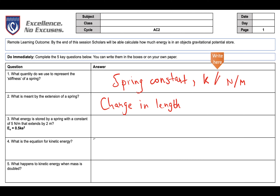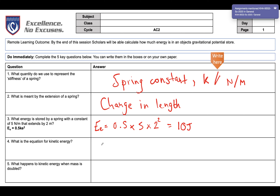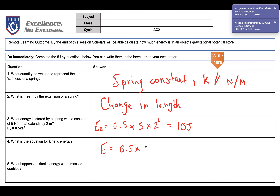What energy is stored by a spring with a spring constant of five newtons per meter that extends by two meters? Using the equation — 0.5 k e squared — that is 0.5 times the spring constant of five newtons per meter, times two meters squared. We type that into a calculator and we get 10 joules. The equation for kinetic energy is: Ek equals 0.5 times mass times speed squared.